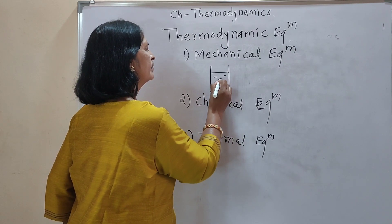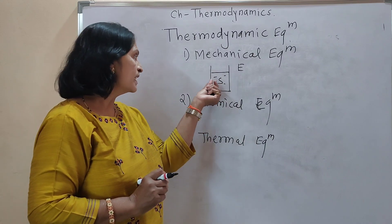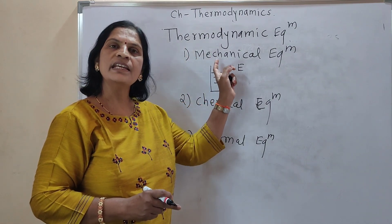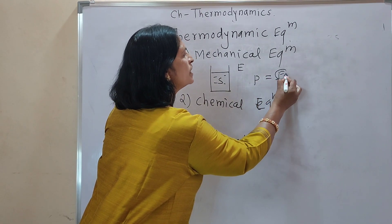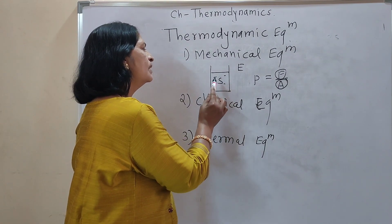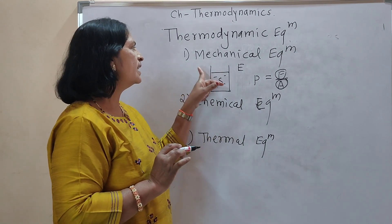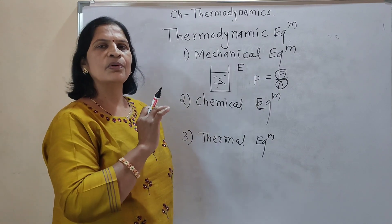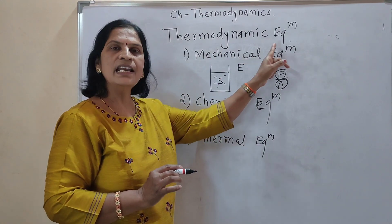What is mechanical equilibrium? Consider a system and its environment or surrounding. When there is no unbalanced force acting between the system and its surrounding, we say the system is in mechanical equilibrium. Since pressure equals force per unit area, when the pressure of the system remains constant and the pressure between the system and surrounding also remains constant, the system is in mechanical equilibrium.